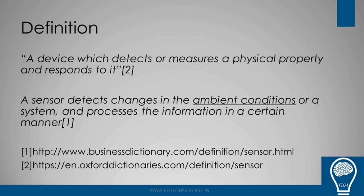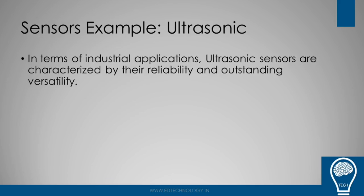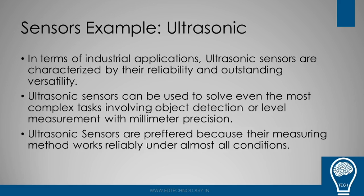Let us understand sensors with some examples. One example is ultrasonic sensors. In industrial applications, ultrasonic sensors are characterized by their reliability and outstanding versatility. They can solve even the most complex tasks because they have very high precision — millimeter precision — making them highly capable.